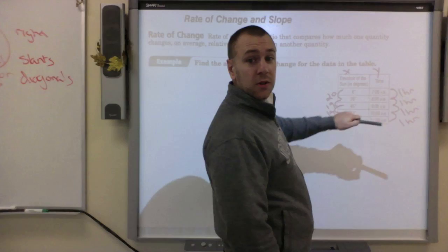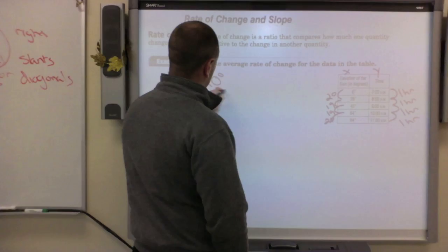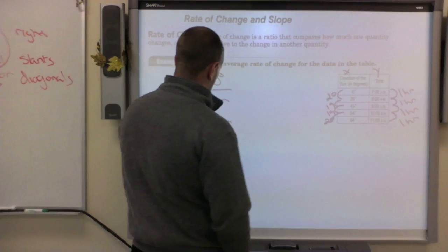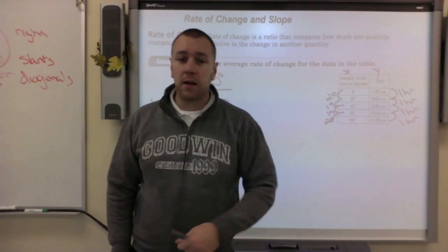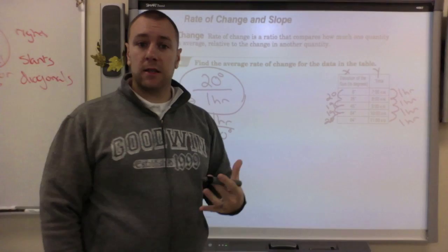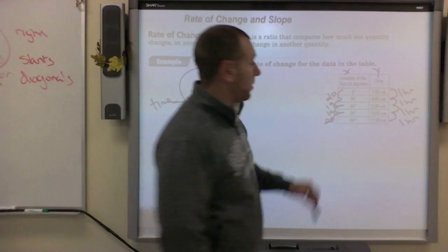In this case, it's going up about 20 degrees per hour, right? So you can say it's 20 degrees for every one hour. Usually we say that the time is always on the bottom, miles per hour, that sort of thing. This would be the correct answer: 20 degrees per hour.